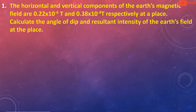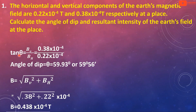We need to find the angle of dip and the resultant intensity of earth's field. The angle of dip is denoted by theta. Tan theta is equal to Bv divided by Bh, where Bv is the vertical component and Bh is the horizontal component of earth's magnetic field.